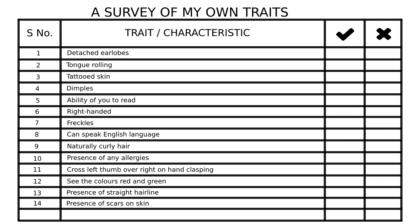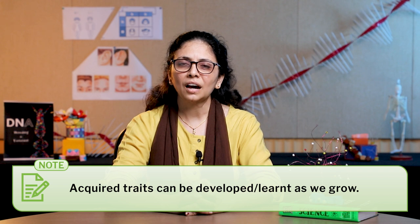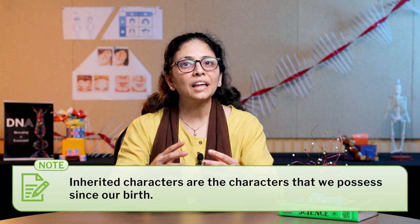I announced the following traits and asked students to note them down in their notebooks, ticking or crossing them depending on whether they possess those traits: detached earlobe, tongue rolling, dimples, ability to read, right-handed, freckles, ability to speak English, naturally curly hair, crossing left thumb over right on hand clasping, ability to see colors red and green, and presence of a straight hairline. As the discussion went on, a natural question came to their mind: from where do we get these characters? We discussed, and my students could conclude that acquired characters are those we achieve in our lifetime as we grow, whereas inherited characters are those we possess since birth.